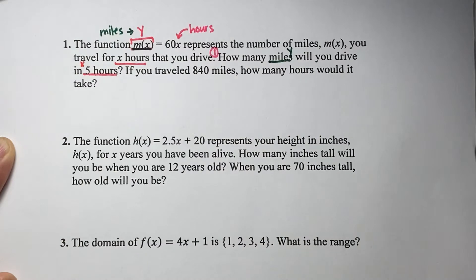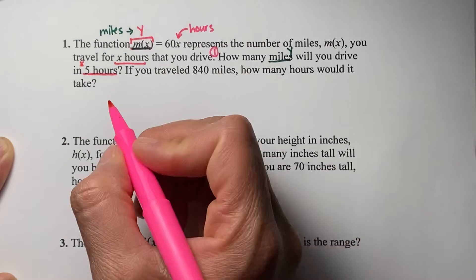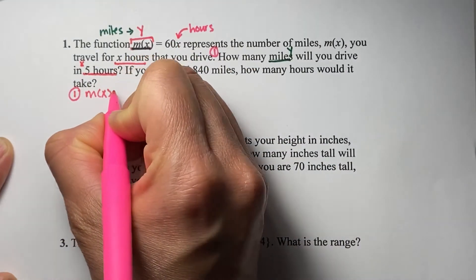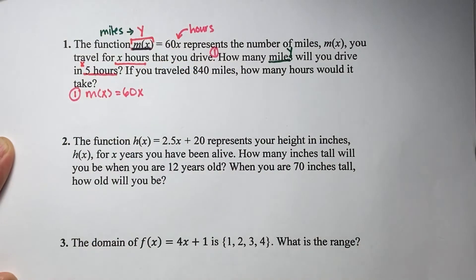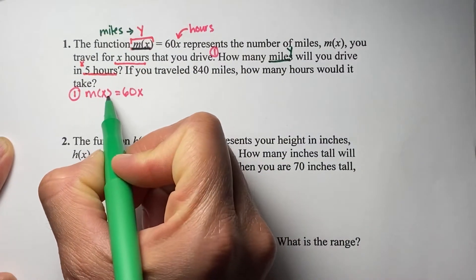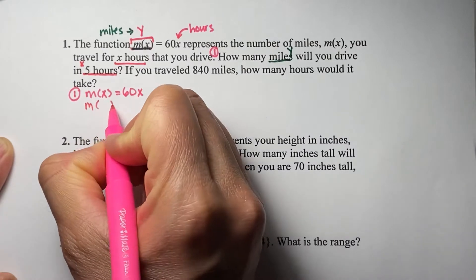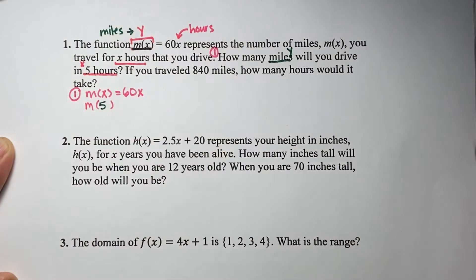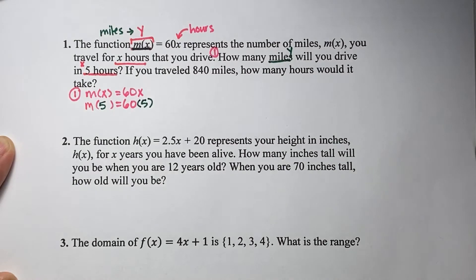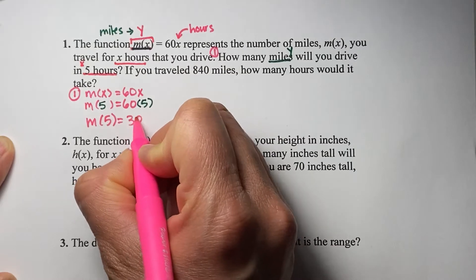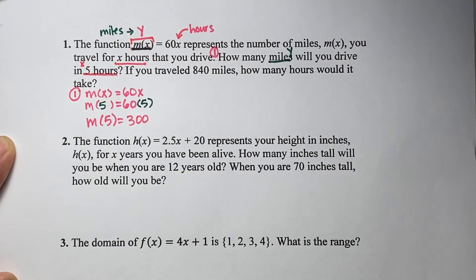They're telling us five hours, so five represents x — basically when x is five, what is the y value? Let's write our function notation: m of x equals 60x. We don't know the number of miles, but we know x is five, so we write m of five equals 60 times 5. Multiplying, m of five equals 300.